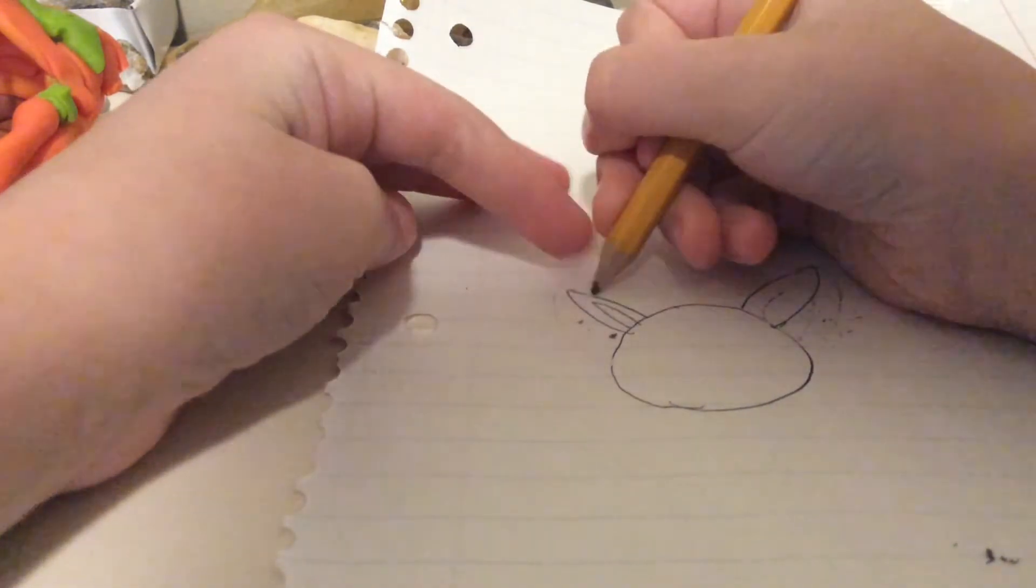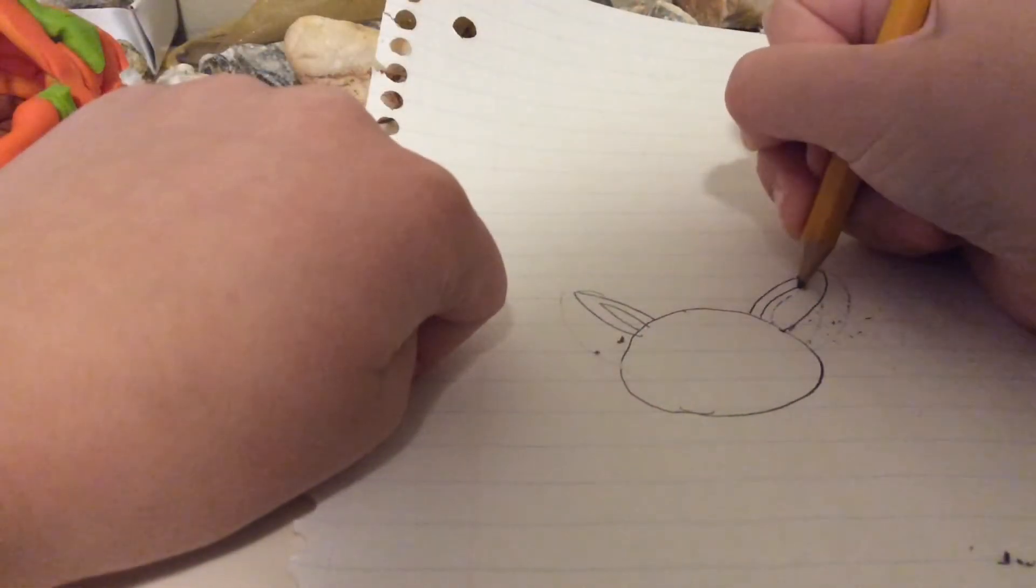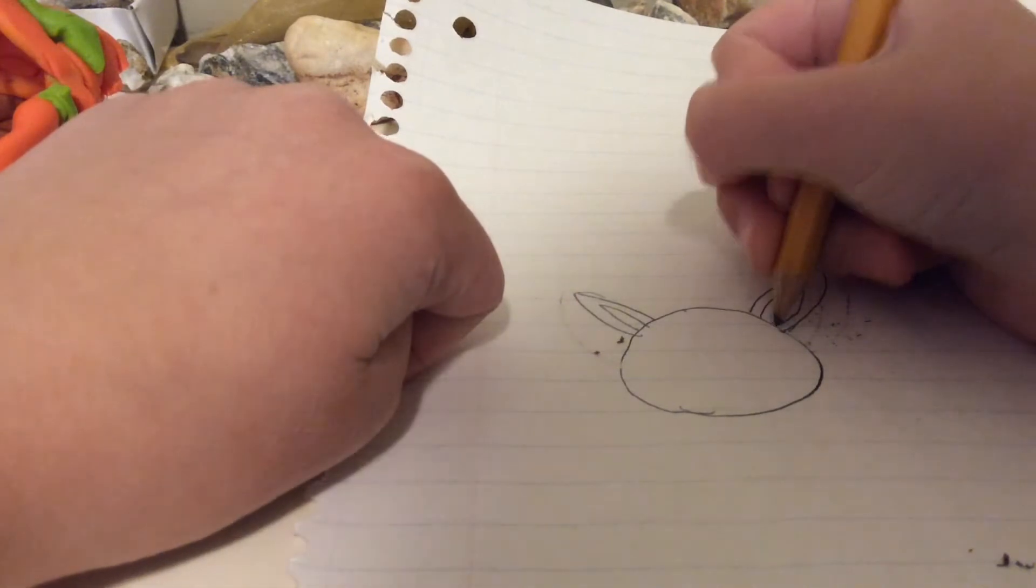And then draw another little one of those on the inside. They're kind of like ovals, but only half ovals to the head.